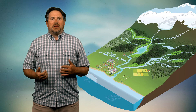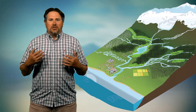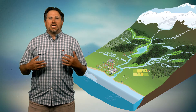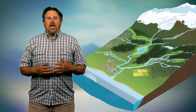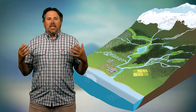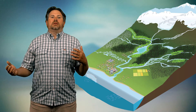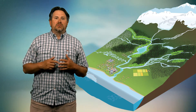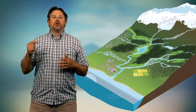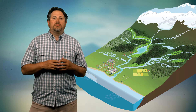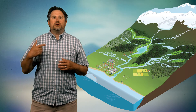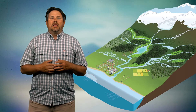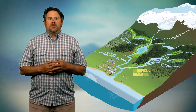Behind these dams there are reservoirs and lakes that are formed. The water can be taken out of those lakes, spilled over the dams, and the energy of that turns turbines to make power.